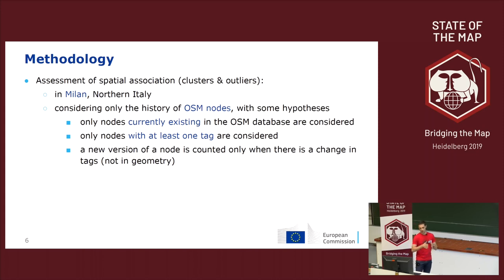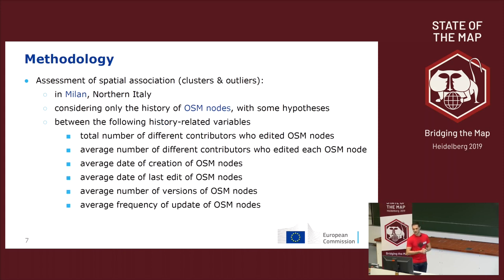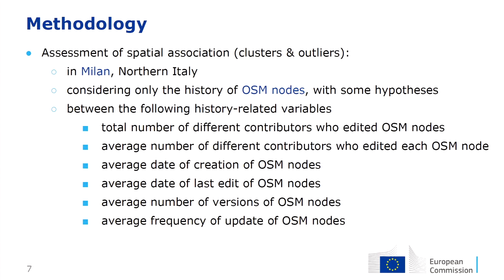We consider for this analysis only the history of OSM nodes, extracting for each cell only nodes under certain hypotheses: we only consider nodes currently existing in the database and nodes having at least one tag. A new version of a node is counted only when there is a change in the tags and not in the geometry. We assess spatial association between variables: total contributors who edited OSM nodes, average contributors per node, average date of creation and last edit, average number of versions, and average frequency of updates for each grid cell.